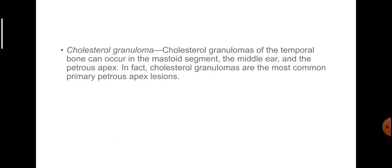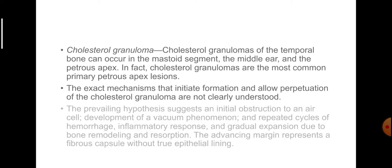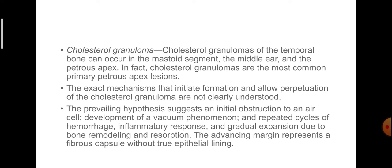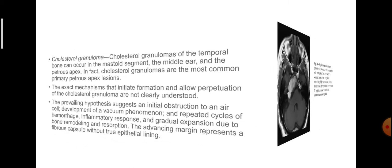Cholesterol granuloma: Cholesterol granulomas of the temporal bone can occur in the mastoid segment, the middle ear and the petrous apex. In fact, cholesterol granulomas are the most common primary petrous apex lesions. The exact mechanism is not clearly understood, but the prevailing hypothesis suggests initial obstruction of an air cell, development of a vacuum phenomenon, repeated cycles of hemorrhage, inflammatory response and gradual expansion due to bone remodeling and resorption. The advancing margin represents a fibrous capsule without true epithelial lining.